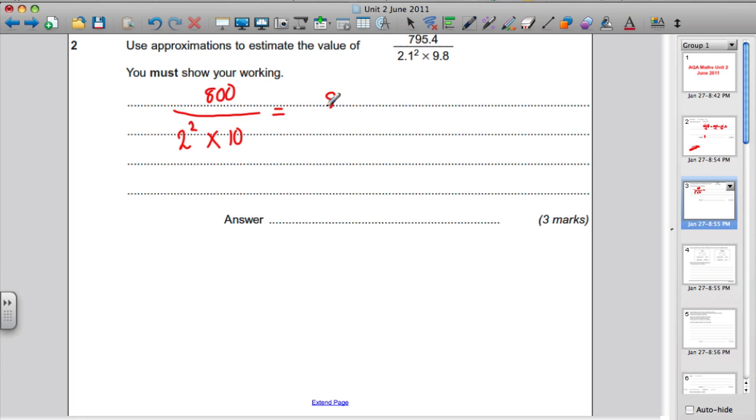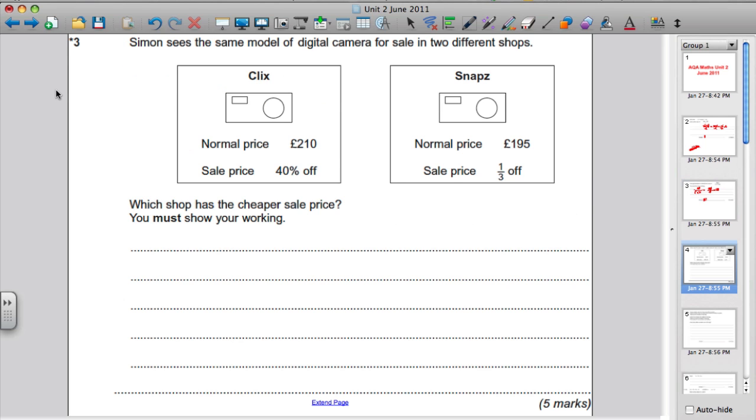We've still got 800 on the top. 2 squared is 4, 4 times 10 is 40. So this would be 800 over 40, which simplifies to 20. And the answer you should have got there was 20. Very straightforward. You must get these questions right.